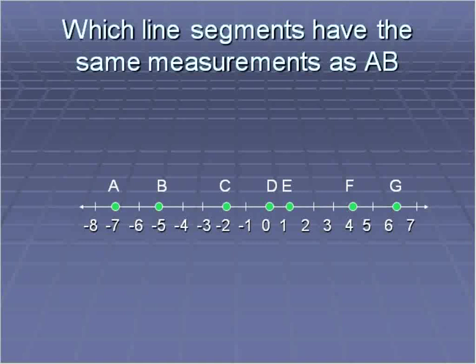The next type of question we may see or encounter would be this type of question. Which line segments have the same measurements as AB? I have the line segment AB here I'm going to highlight between the point A and B. And it's the point negative seven and negative five. So if I want to find the difference, I would say negative seven minus negative five. That will give me negative seven plus five. In other words, negative two. I'll take the absolute value of negative two, which gives me positive two. So that is the distance.